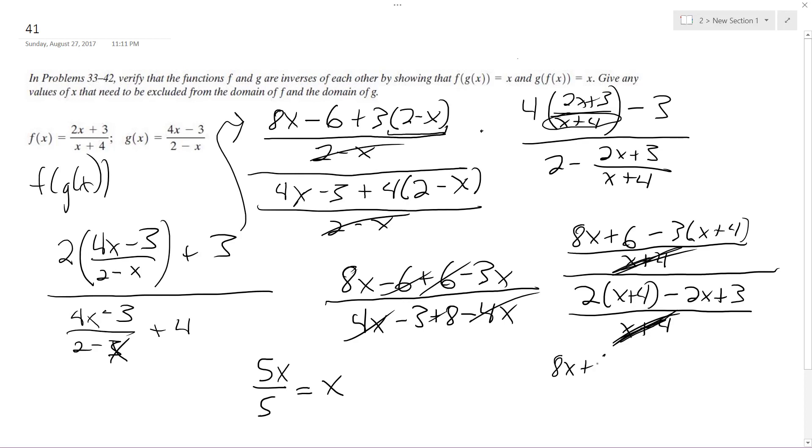8x plus 6 minus 3x minus 12. You can't forget to distribute the minus sign with that. 2x plus 8 minus 2x plus 3. 2x cancel out.